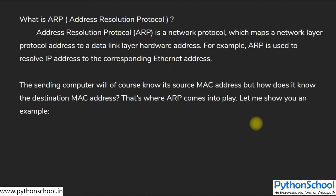Address Resolution Protocol is a network protocol which maps a network layer protocol address to a data link layer hardware address. In our example, we know the source IP, destination IP, and source MAC address, but we don't know the destination MAC address. ARP is used to map the destination IP address to the destination MAC address.